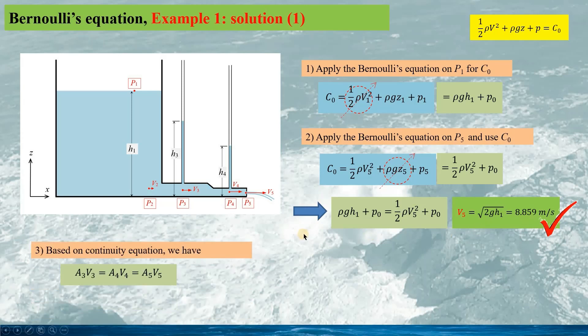Based on the continuity equation, we have A3 times V3 equaling A4 times V4 equaling A5 times V5. Since we already obtained the section areas A3, A4, and A5, and we use V5, we can calculate the velocities V3 and V4, given by this result.